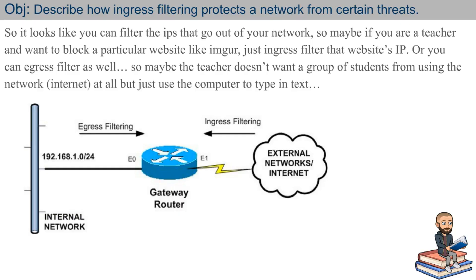We also have egress filtering. A good way to remember ingress filtering is by remembering what egress filtering is. You can filter IPs both ways — incoming and outgoing of a network. So maybe if you're a teacher and want to block a particular website, like a certain school district website, one way they may have done this is by finding the IP addresses for that website and applying an ingress filter on it.